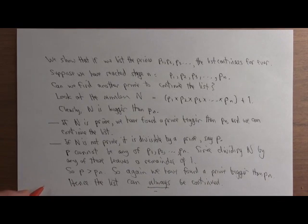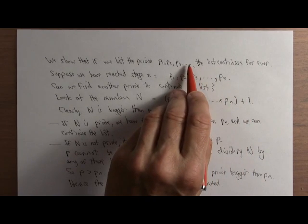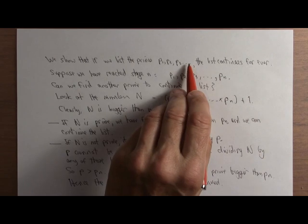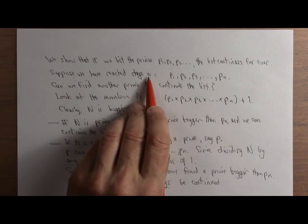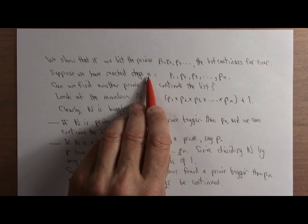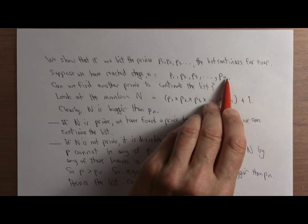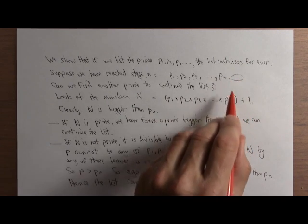Let's just take another look at what we've done. We start with a list of all of the primes. We try to list all of the primes. We have to show that we can do that and keep going. So we start with a list of the primes. We assume we've reached some stage n. N could be 10, a million, a billion, a trillion, whatever. We've reached some stage and we show that we can always find another prime bigger than the last one.